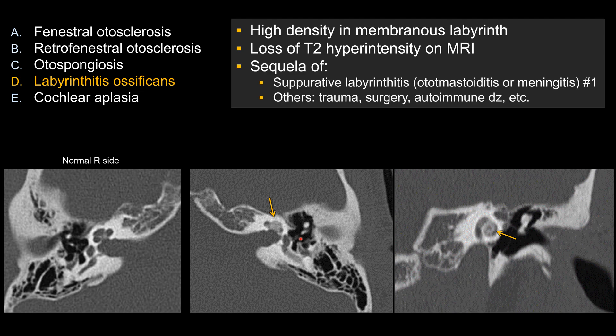On a board exam, they can also ask you the etiology for labyrinthitis ossificans. The most common cause is some type of infection, most commonly meningitis or otomastoiditis. Essentially anything that can cause inflammation, irritation, or infection inside the inner ear — for example, blood entering the inner ear structure through surgery, trauma, or any type of autoimmune process — can cause labyrinthitis ossificans.